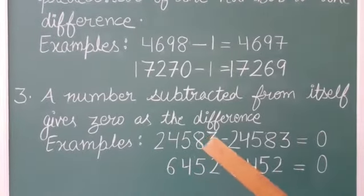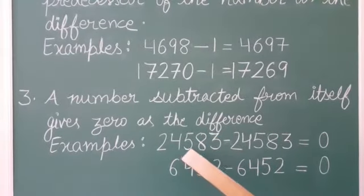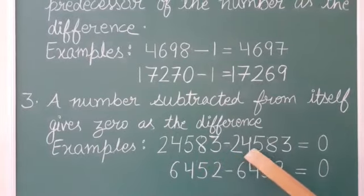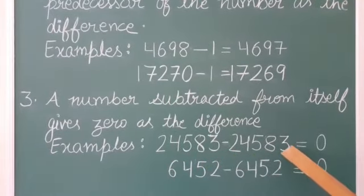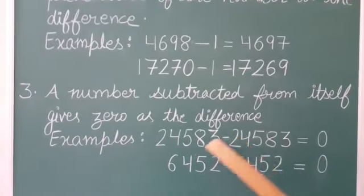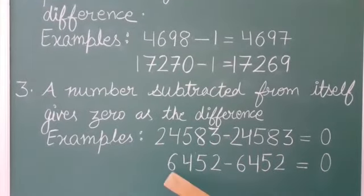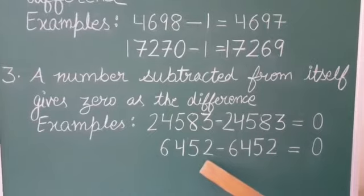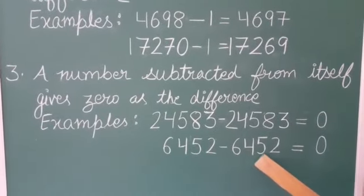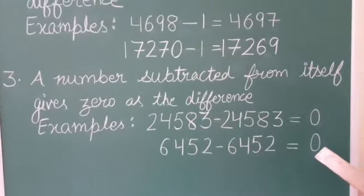For example, when we subtract 24,583 from 24,583—meaning we are subtracting the same numbers—we get the answer 0. Similarly, when we subtract 6,452 minus 6,452, we get the answer 0.